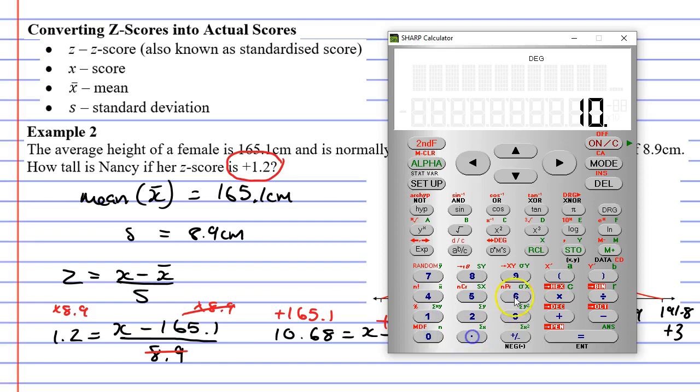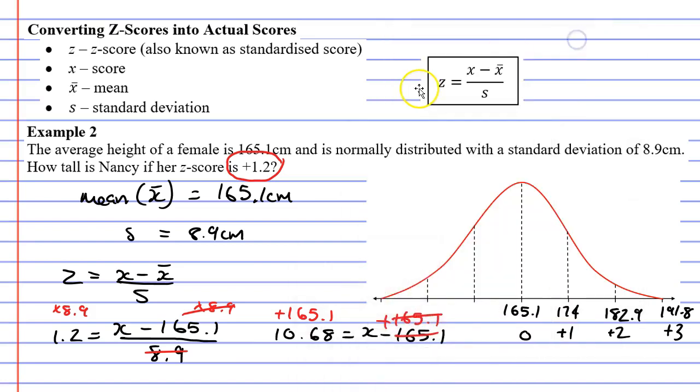So 10.68 plus 165.1 gives us 175.78. We'll round that to 175.8 cm. 175.8 cm is x, or the height of Nancy.